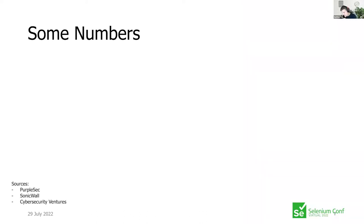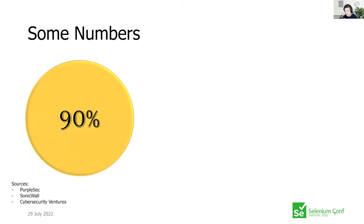After doing research, I want to share some numbers published by Purple Sec, Sonic Wall, and Cybersecurity Ventures. The first number is incredibly high: 90% of all security incidents are due to attackers exploiting known software bugs. If the attackers know them, your team also knows them — you just don't fix them. We definitely have to decrease this number.